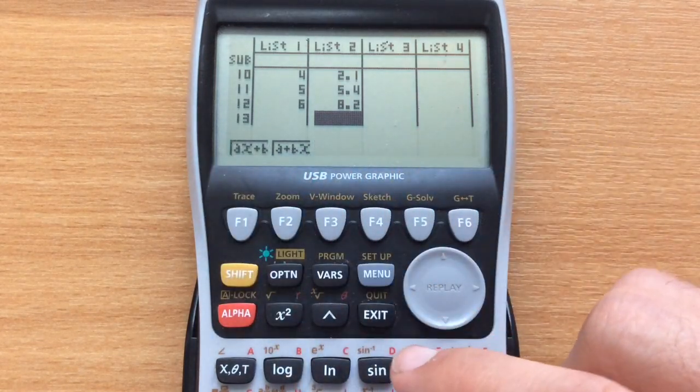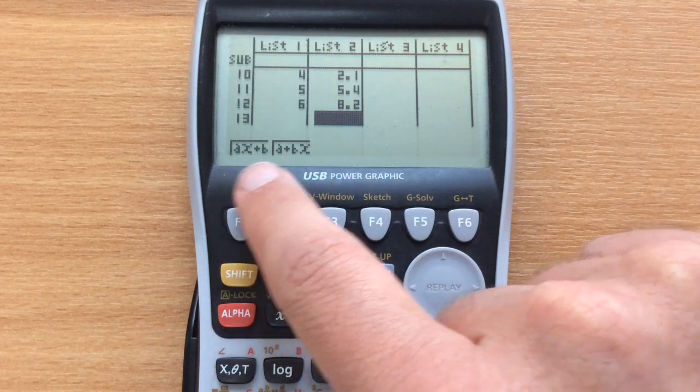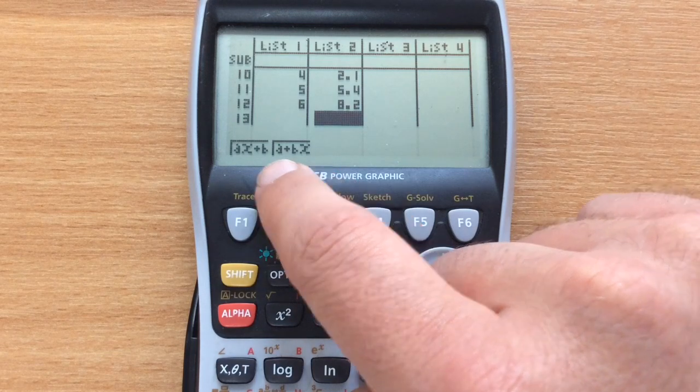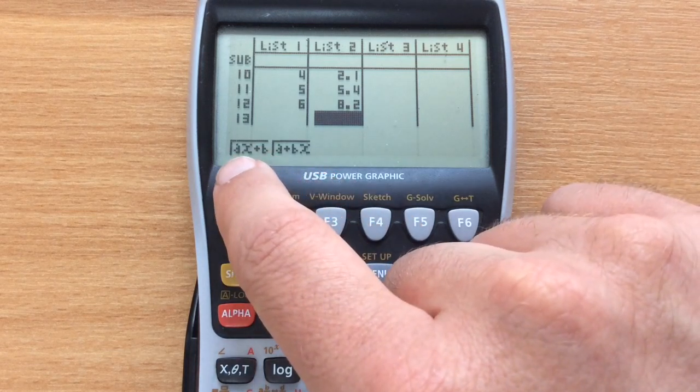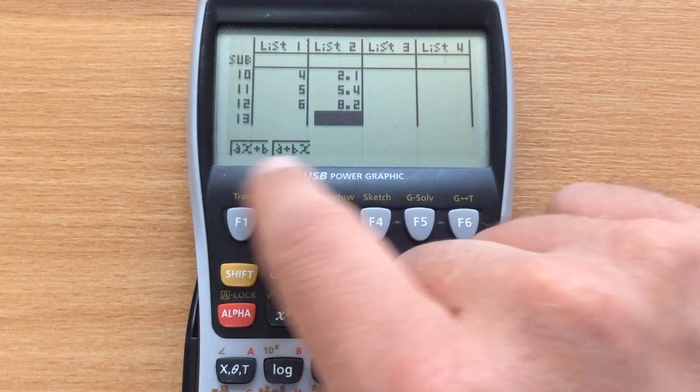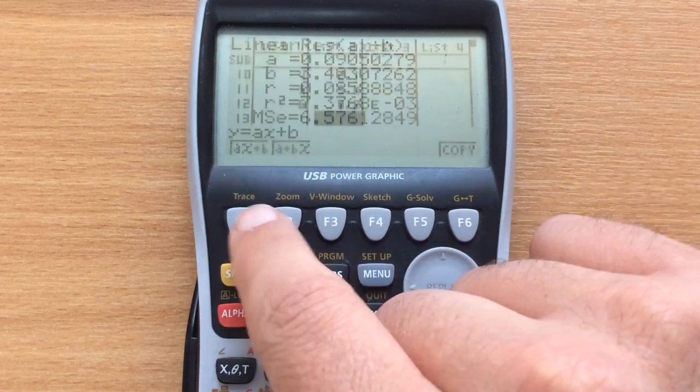It will now ask us whether we want Y equals AX plus B or A plus BX. It doesn't actually make any difference to the calculations other than A and B are going to mean either the coefficient of X or the number that's on its own. It doesn't matter which one you press. I'll press the first one.